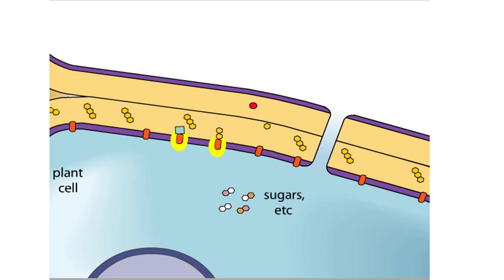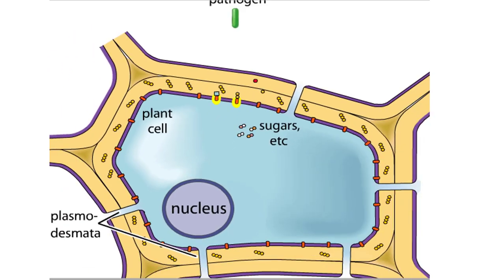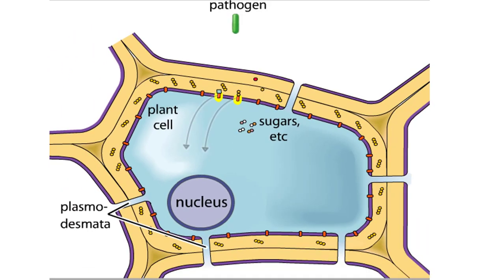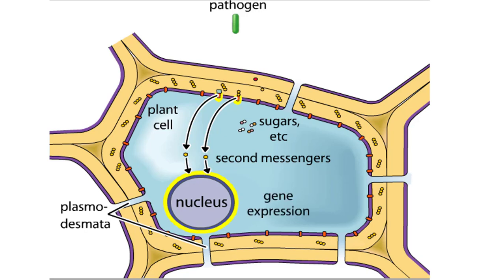When molecules bind to the plant receptors, these receptors become activated and trigger a cascade of reactions. These reactions lead to the production of second messengers, molecules that migrate through the cell and induce it to respond. Here, the cell responds by expressing certain genes.